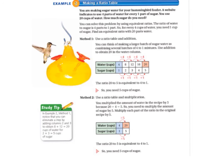Example 2: we're going to be making a ratio table. We're making sugar water for our hummingbird feeder. A website indicates to use 4 parts of water for every 1 part of sugar, and we use 20 cups of water. How much sugar do we need? We can solve this using equivalent ratios. The ratio of water to sugar is 4 parts to 1 part, so for every 4 cups of water we need 1 cup of sugar.